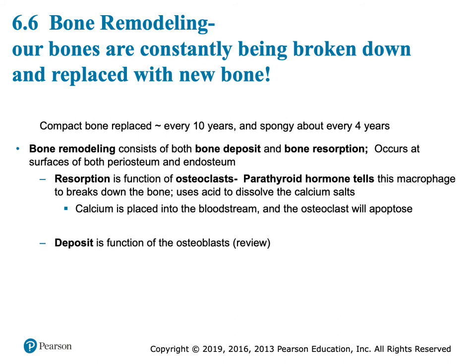Sometimes resorption from osteoclasts happens just because we have a crack — routine remodeling every day. Then osteoblasts come and deposit new bone. But sometimes our bloodstream says it's really low on calcium. We must have calcium to fire neurons, allow blood to clot, and for muscles to contract. If it's low, parathyroid hormone is released to recognize that — that's the next slide.